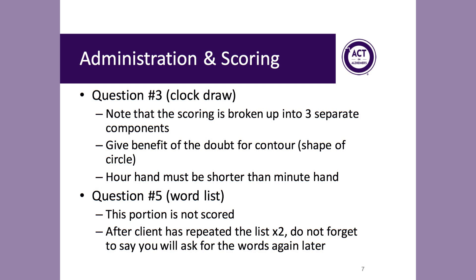Question number three is a clock drawing task. It's important to keep in mind that the scoring of this clock is broken up into three separate components, each of which is awarded one point. Give patients the benefit of the doubt for the contour or shape of the circle, because in clinical experience, many patients draw a circle rather hastily. Note also that the hour hand must be shorter than the minute hand. On other instruments like the mini cog, the length of the hands does not matter, but for the MOCA, hand length is incorporated into scoring.